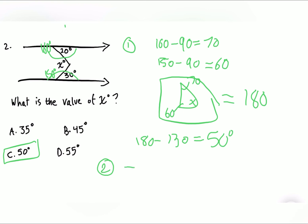Method two is much simpler: just add the two given angles directly. 30 + 20 = 50°. That's your answer for x.